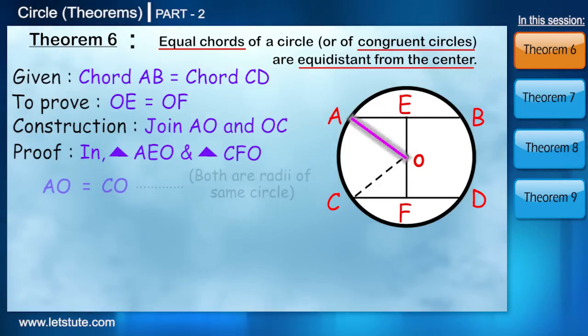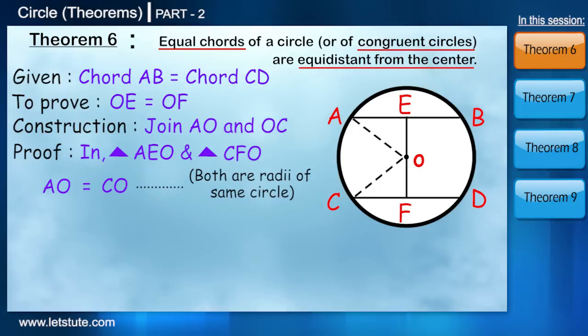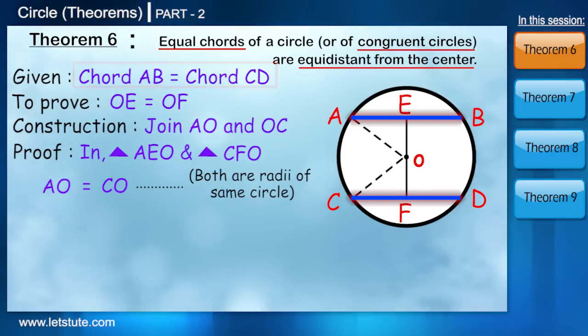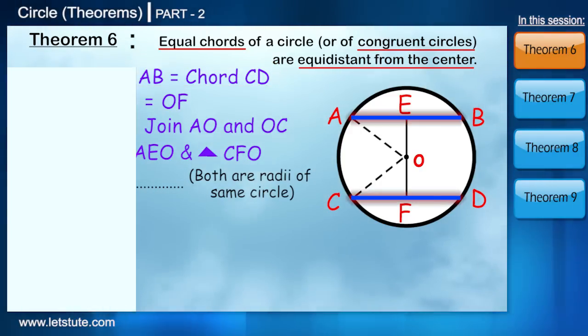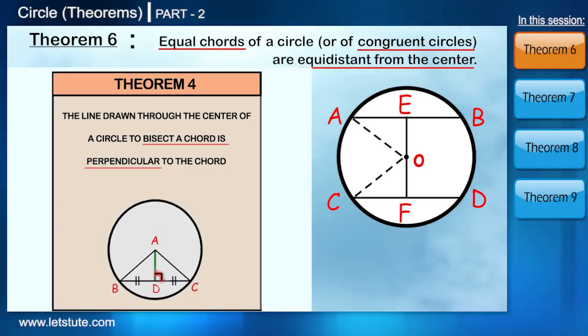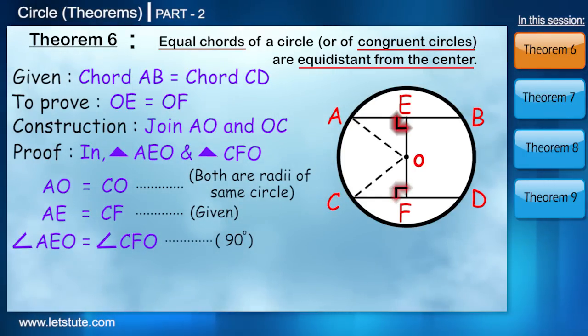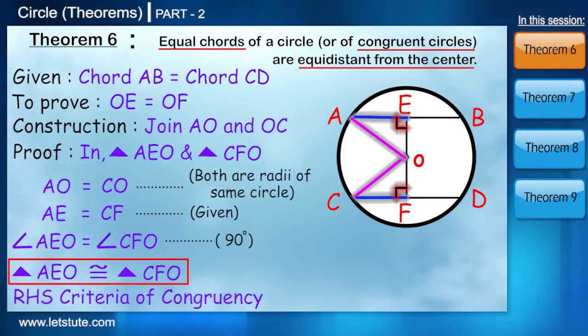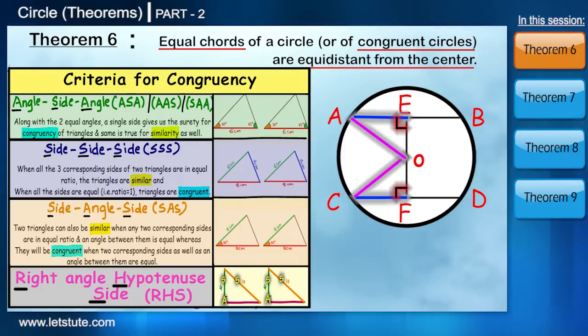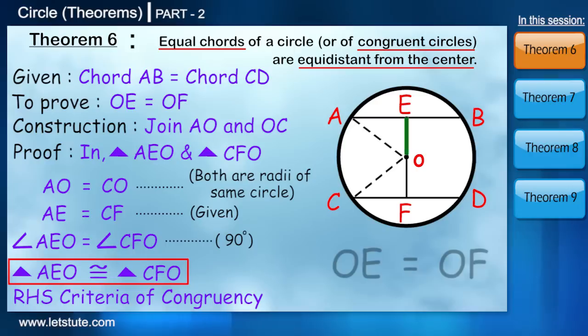AO is equal to CO because they are the radii of the same circle. We know AB is equal to CD because it's given. And according to the perpendicular bisector theorem, E and F are the midpoint and hence from this we can say that AE is equal to CF. Angle AEO is equal to angle CFO because both are 90 degrees. So from this we can say that both the triangles are now congruent by RHS criteria of congruency.